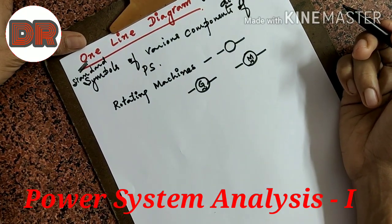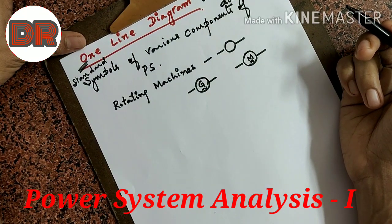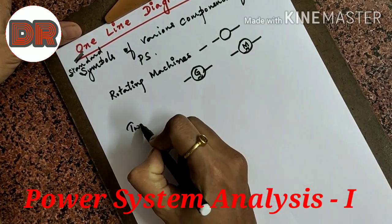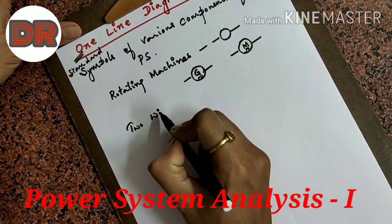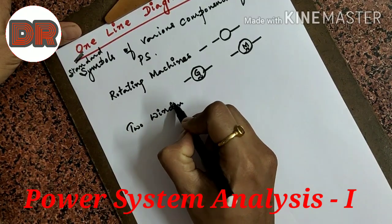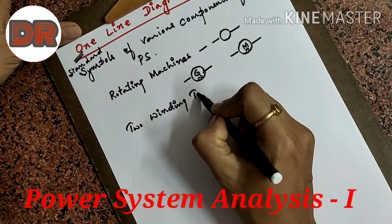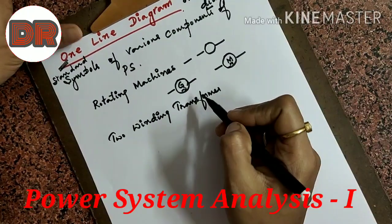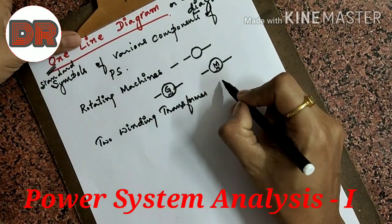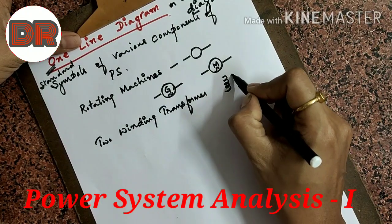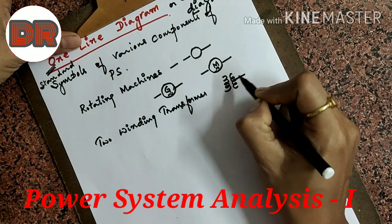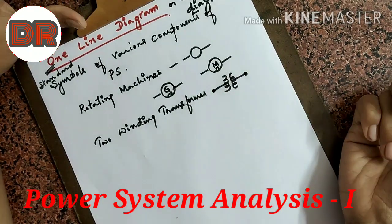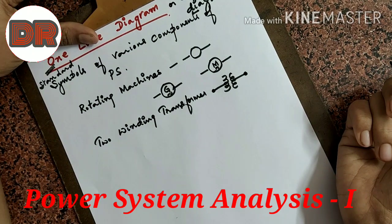The second important component of the power system is the transformer. For a two-winding transformer, you show the two windings — that is, primary and secondary winding — like this. This is the symbol for a two-winding transformer.